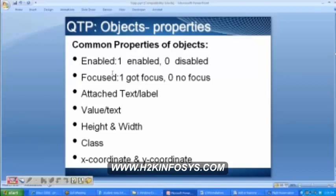All the objects will have certain properties. For example, now you are a participant — what are the properties that you have? You can read, understand, grasp, and answer questions. So you have particular properties. Similarly, all the objects will have some properties. You take any animal — it cannot talk and most have four legs. Similarly, any object will have some properties, as listed here.